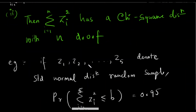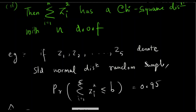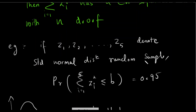So we say that Z1, Z2, Z3, Z5 are equal to the standard normal distribution. We say that the probability of summation of Zi squared from i equals 1 to 5, less than or equal to b, has a confidence level equal to 0.95.